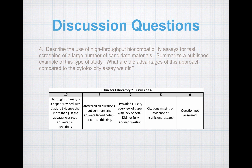For the fourth discussion question, describe the use of high-throughput biocompatibility assays for fast screening of a large number of candidate materials. Summarize a published example of this type of study. What are the advantages of this approach as compared to the cytotoxicity assay we did? Your answer will be evaluated with the provided rubric.